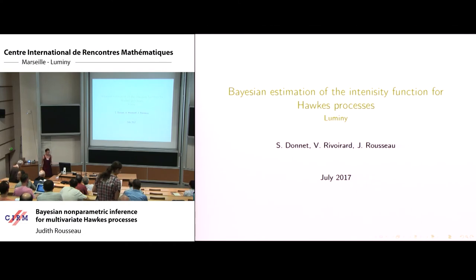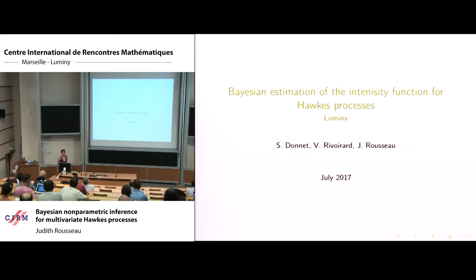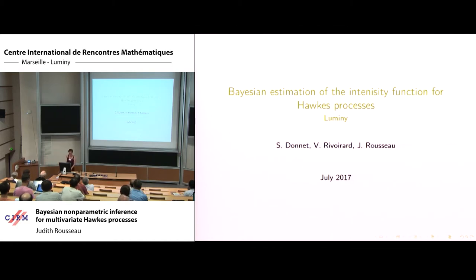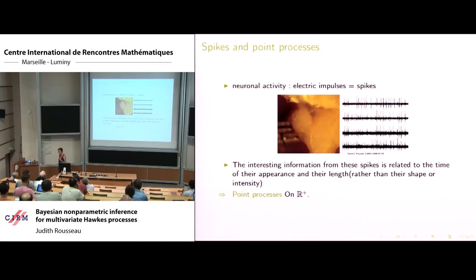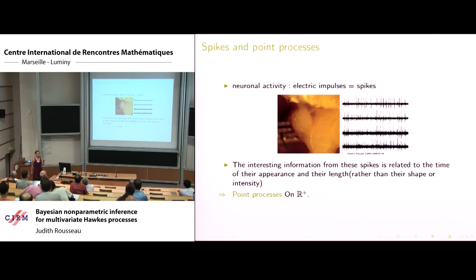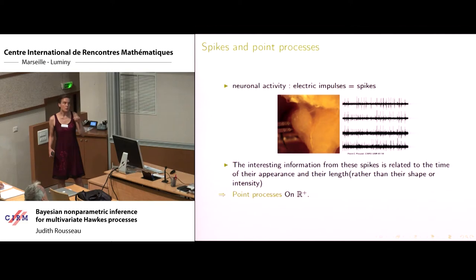Thanks to the organizers for the invitation, it's a great pleasure to be here. I'm going to talk about some work that I've been doing over the last few years with Sophie Donnet, Vincent Rivoirat on Hawkes processes. This is a new version from the one I presented last year because I didn't quite like the results we had at the time. The motivating example is neuronal activity.